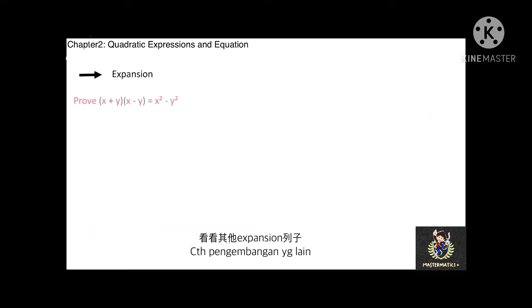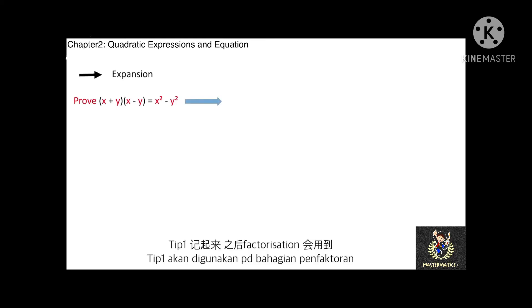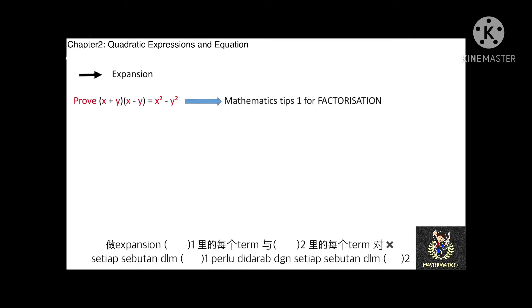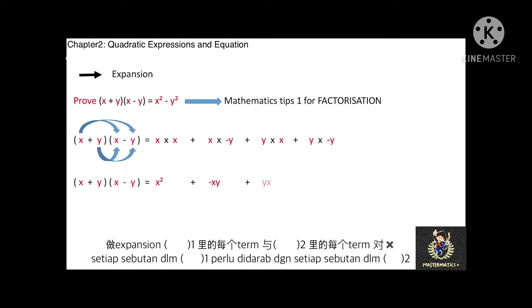Next, can you prove that (x plus y) multiplied with (x minus y) equals x squared minus y squared? Please mark this as Mathematics Tips 1, because you will use it for factorization in the next topic. To expand two brackets, each term within the first bracket is multiplied with each term within the second bracket. The negative xy and the positive yx cancel out each other, so the answer equals x squared minus y squared.